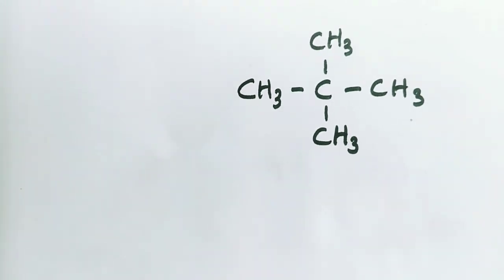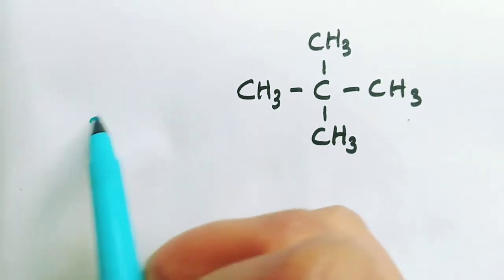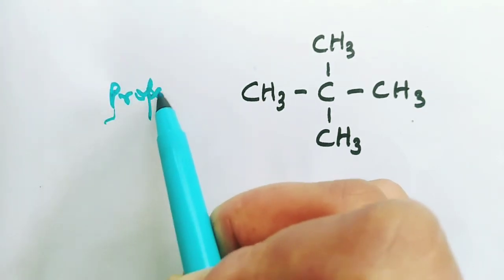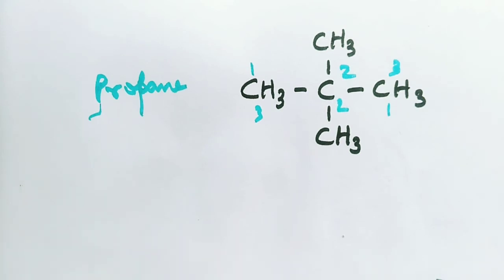Identify the longest carbon chain. This one - it is propane. Second step: in the second step, we number the carbon atoms. There is no harm in numbering from left to right